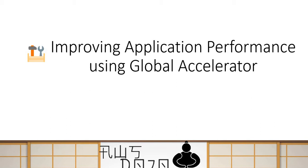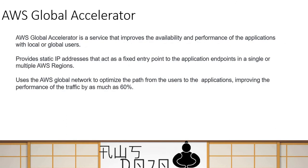Today we are going to talk about the Global Accelerator service, which is used for enhancing availability and performance of applications, especially if your users are globally distributed. Global Accelerator is primarily used to enhance the availability and performance of your application when your users are global. For instance, if you're deploying one application and your users are globally distributed, you can use Global Accelerator to enhance availability and performance for such distributed user groups.